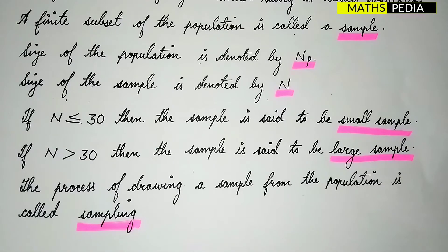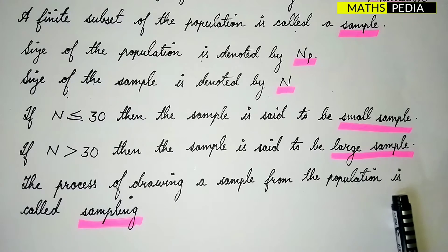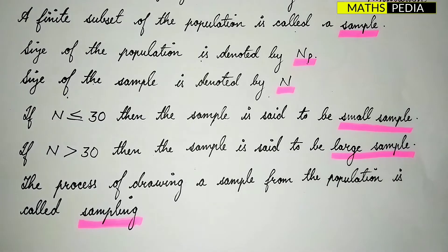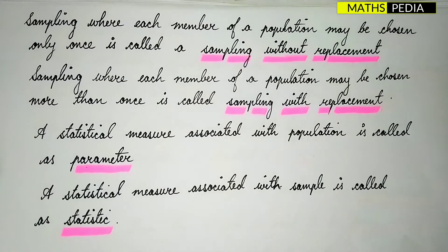Next, what is sampling? The process of drawing a sample from the population is called sampling. We take the sample from a certain population in order to do some research or some sort of clarification. That is nothing but sampling.